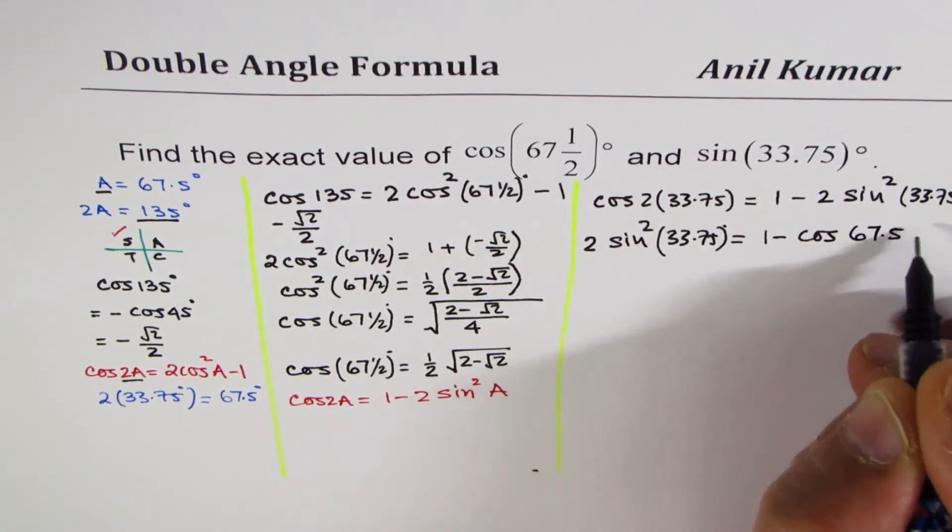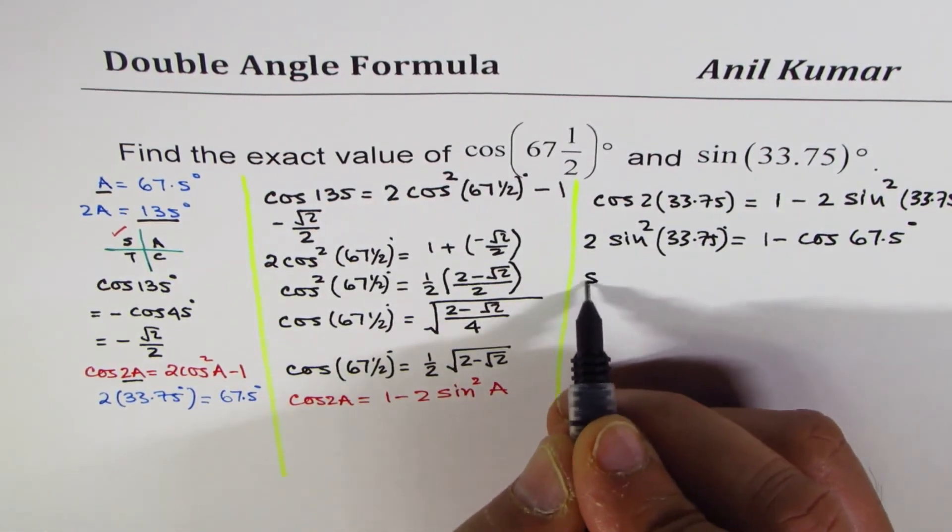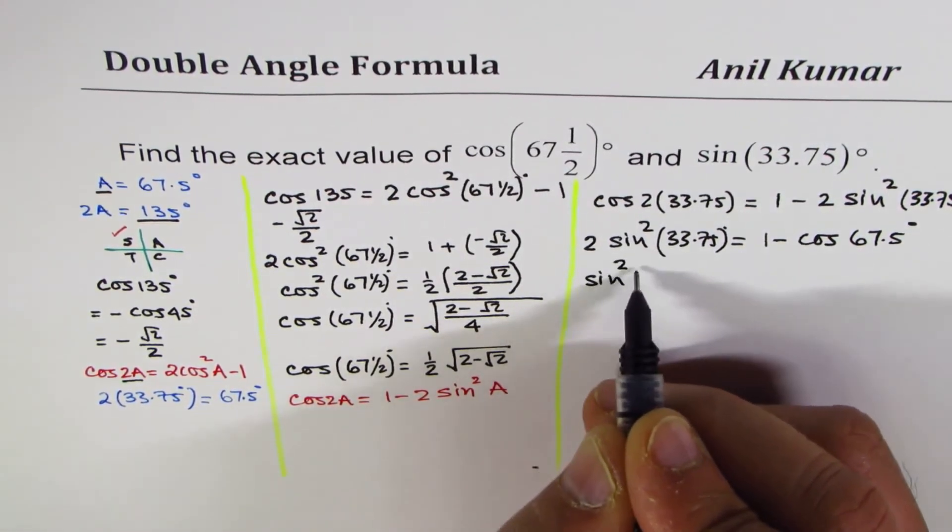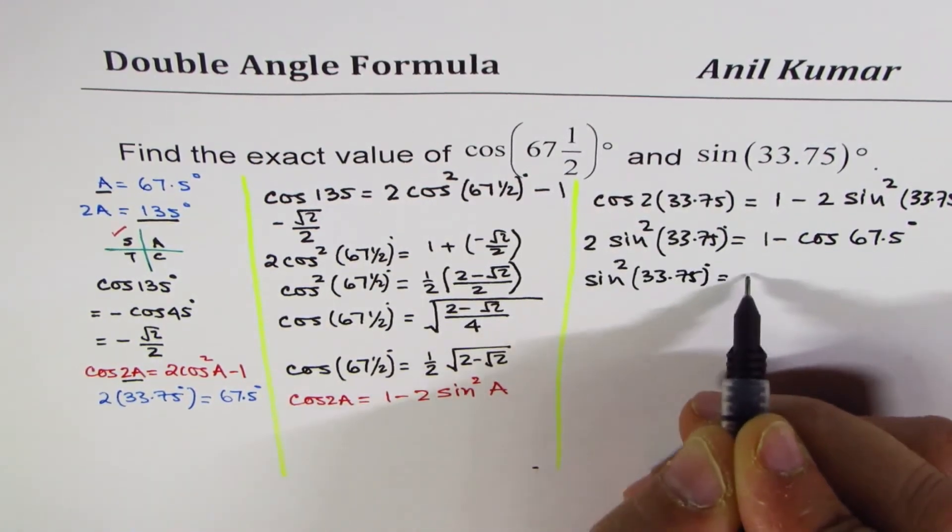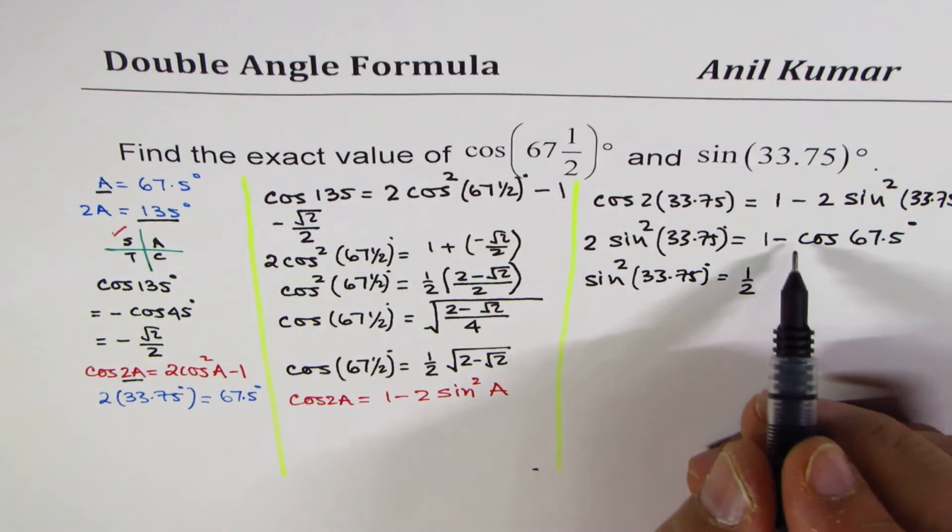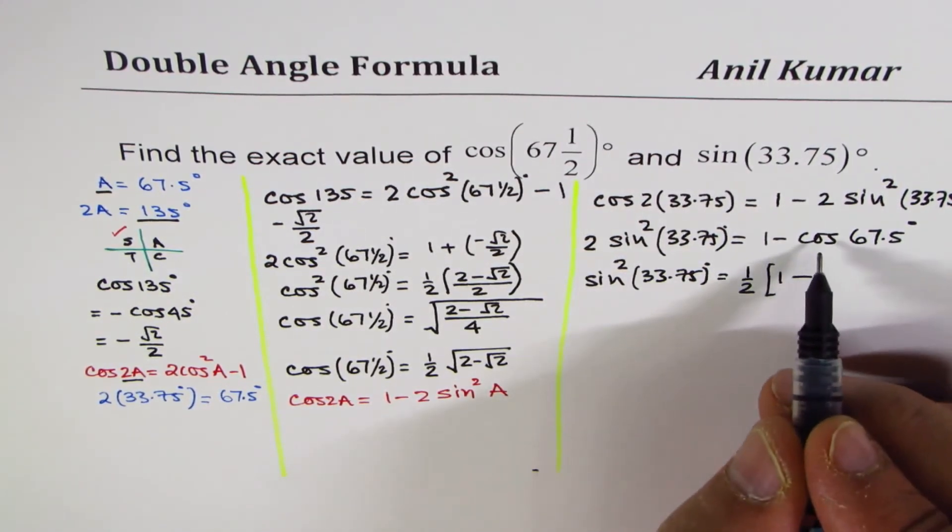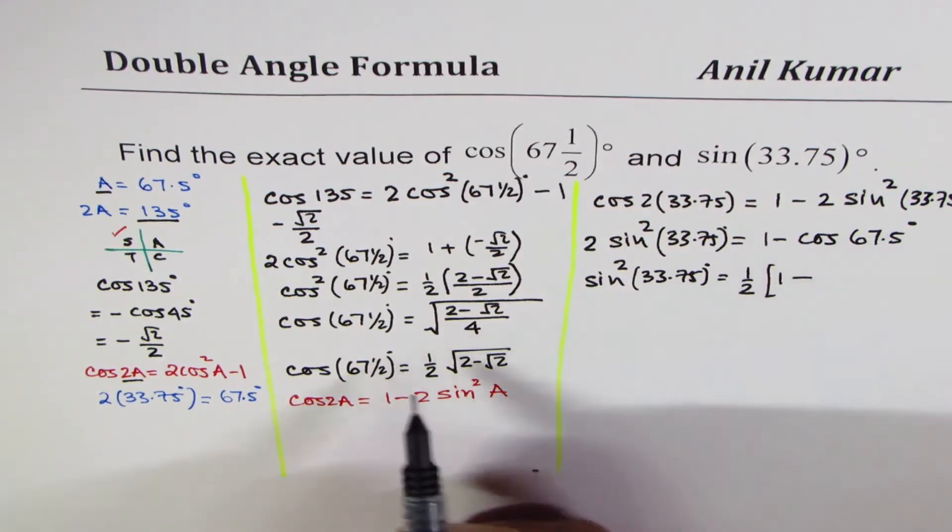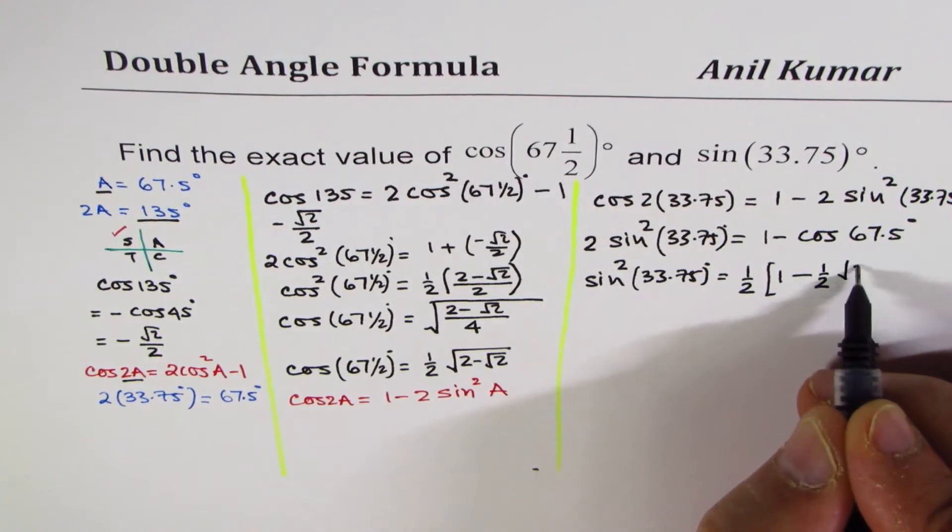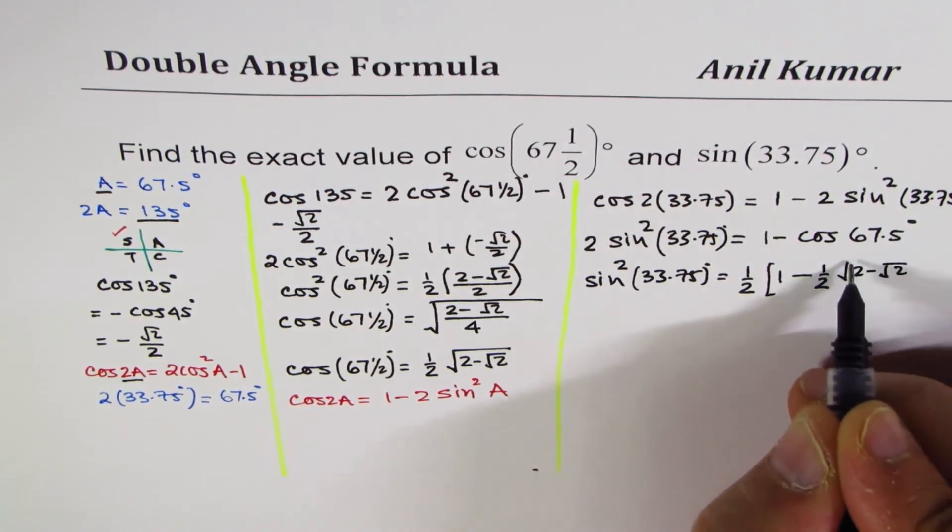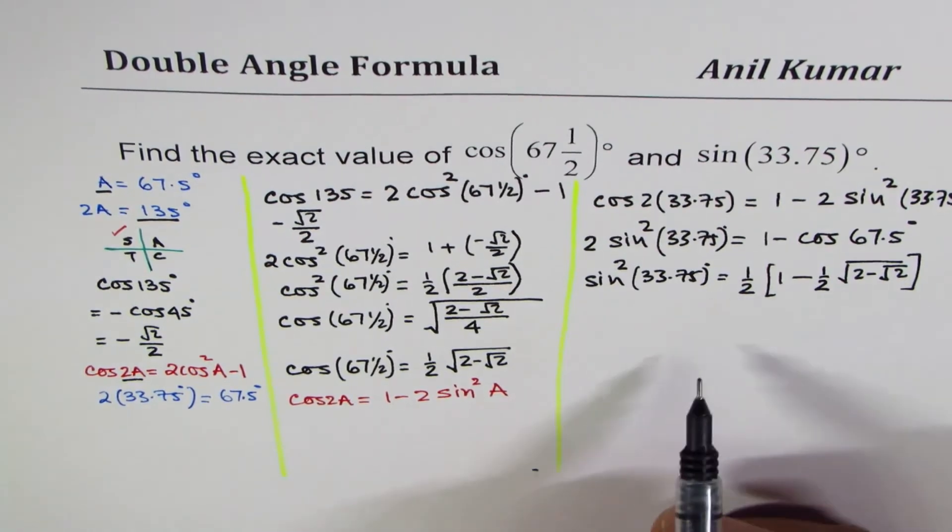So we can write this as sine square 33.75 degrees is equal to half of what we have calculated. 1 minus cos 67.5 is half square root 2 minus square root 2. This looks very complicated, but that's how it is.